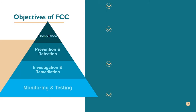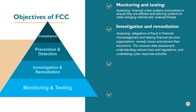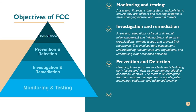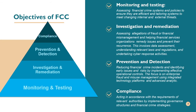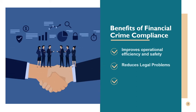Ever wondered why organizations need financial crime compliance? Let's look into its objectives: one, monitoring and testing; two, investigation and remediation; three, prevention and detection; and four, compliance. The step-by-step working of these four domains forms the basis of FCC. Benefits of financial crime compliance include improved operational efficiency and safety, reduced legal problems, and enhanced public relations.